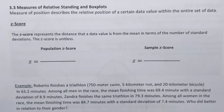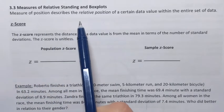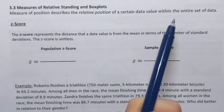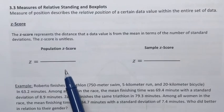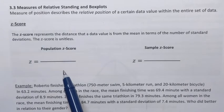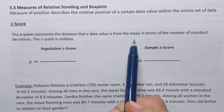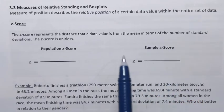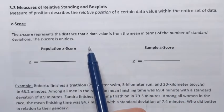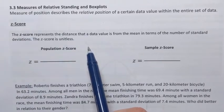In this video we're going to talk about z-score. Z-score is one of the measures of position. Measures of position describe the relative position of certain data value within the entire set of data, so every data value has a corresponding z-score. Z-score represents the distance — how far that data value is from the mean — but that distance is measured in terms of standard deviation. So in other words, z-score tells us how many standard deviations away a certain data value is from the mean, from the center.